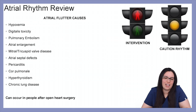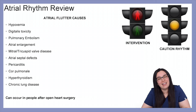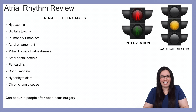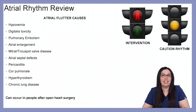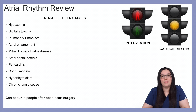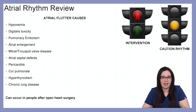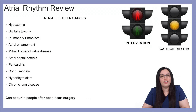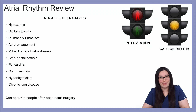The definition is a rapid firing of atrial impulses causing rapid atrial rhythms such as flutter. Causes for atrial flutter include hypoxemia, digitalis toxicity, pulmonary embolism, atrial enlargement, mitral and tricuspid valve disease, atrial septal defects, pericarditis, cor pulmonale, hyperthyroidism, and chronic lung diseases. It can often occur in people after open heart surgery.